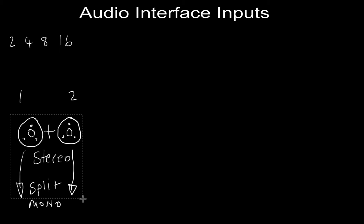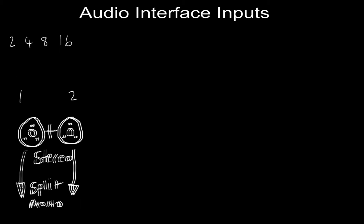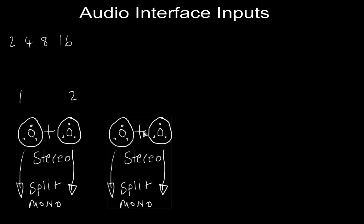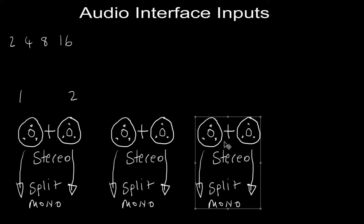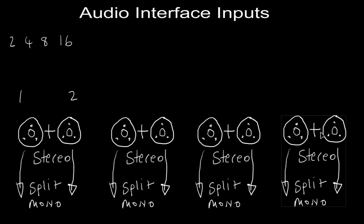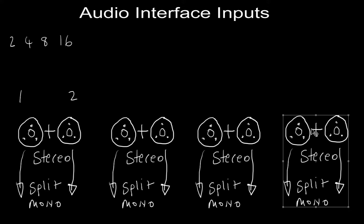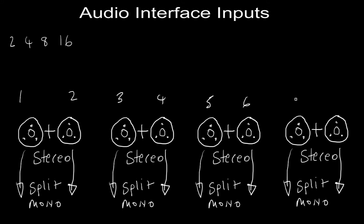So if we have more inputs, let's duplicate these. Now we've got a four-input device, a six-input device, an eight-input device. But it always works the same. These additional pairs — input three and four tied together as a stereo pair, inputs five and six tied together as a stereo pair, inputs seven and eight tied together as a stereo pair.